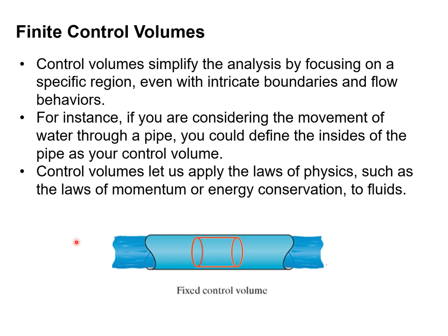The answer is applying what's known as a control volume. So control volumes simplify the analysis by focusing on a specific region. And even with a more complicated boundary than shown here, it's relatively easy to keep track of what's coming into the boundary and what goes out of the boundary. So here, for example, we have a pipe. And so we could define the insides of the pipe as the control volume. So control volumes simplify the problem and let us apply the laws of physics, such as the laws of momentum, energy conservation and continuity to fluids, just like we did with back in classical physics, when we were dealing with an individual mass. So we'll see this play out in the next three chapters, on how we're going to basically rewrite Newton's laws of motion to put them in this control volume analysis, the control volume format.